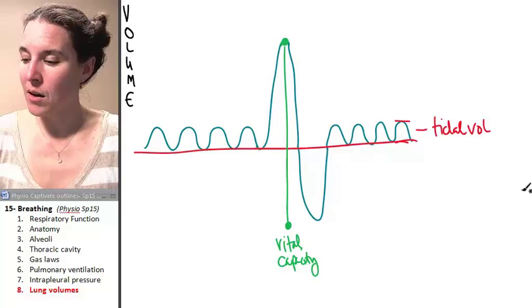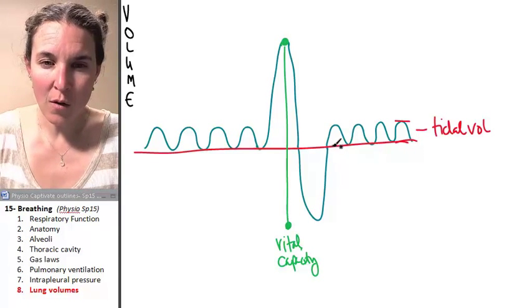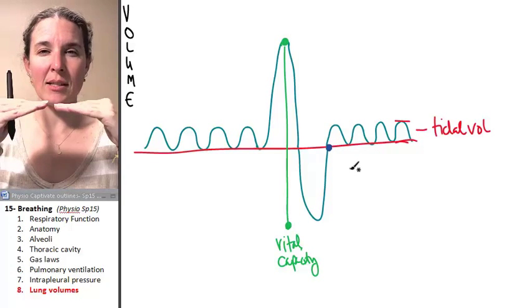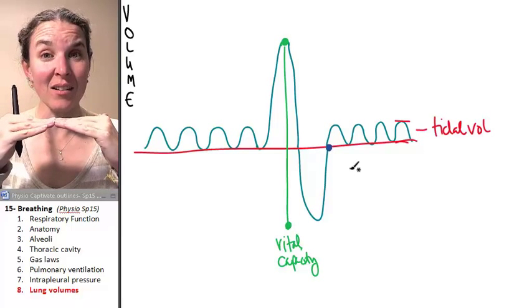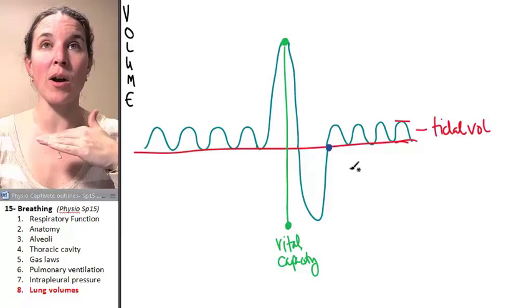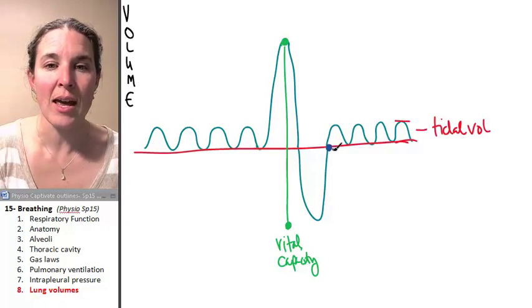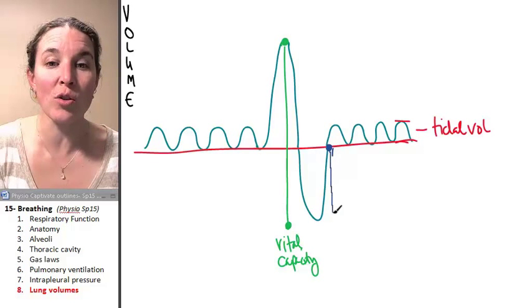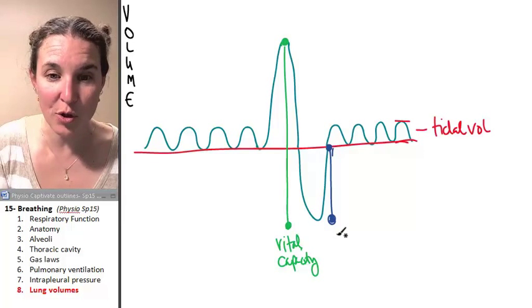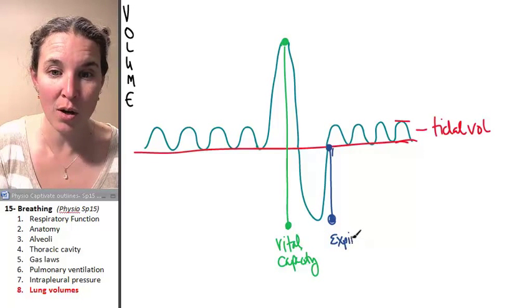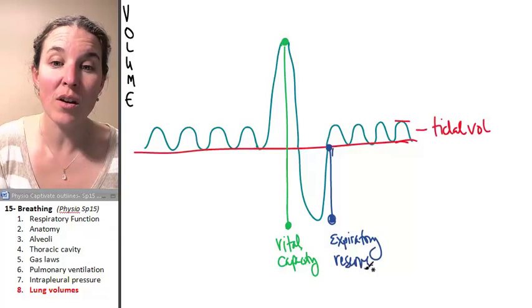You have this difference right here from the base, from the end of a tidal exhale, that little breath. If you get to the end of the exhale, the volume that you exhale total there, that is called your expiratory reserve volume.